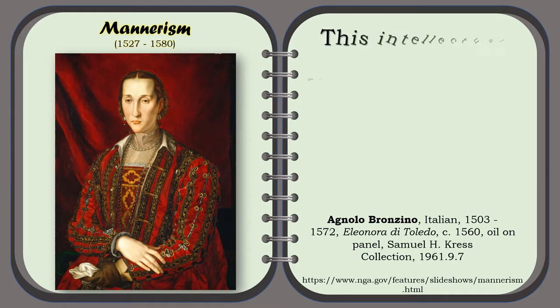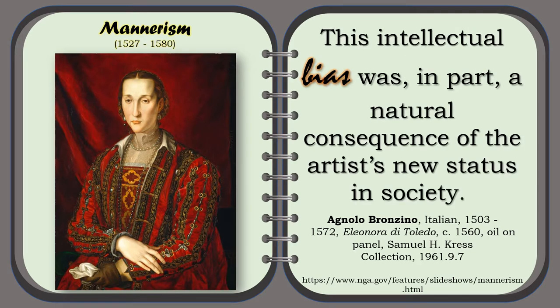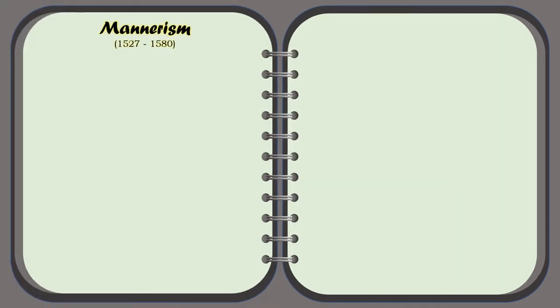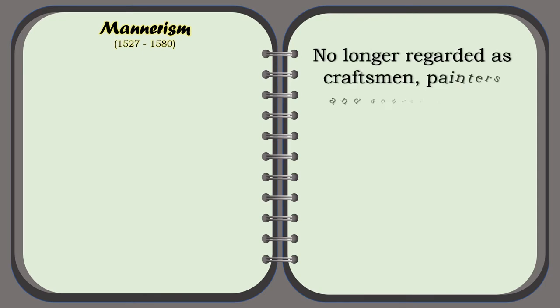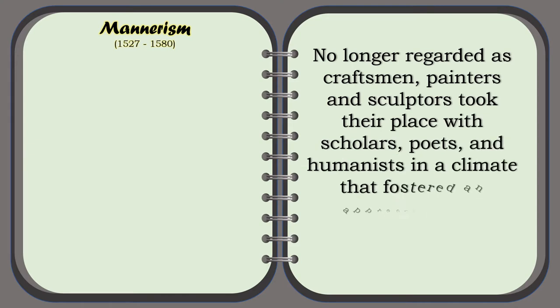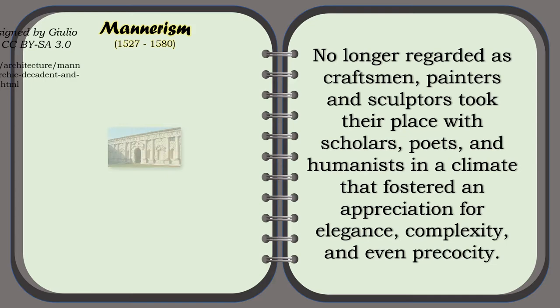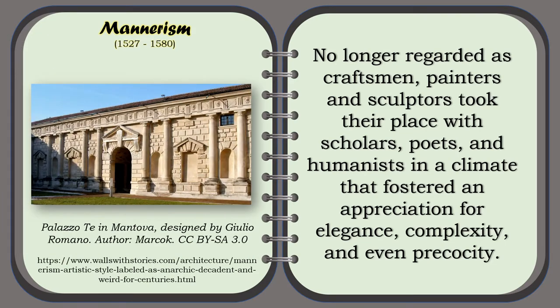This intellectual bias was, in part, a natural consequence of the artist's new status in society. No longer regarded as craftsmen, painters and sculptors took their place with scholars, poets, and humanists in the climate that fostered an appreciation for elegance, complexity, and even precocity. For example, the design of Giulio Romano — the Palazzo Te in Mantova.